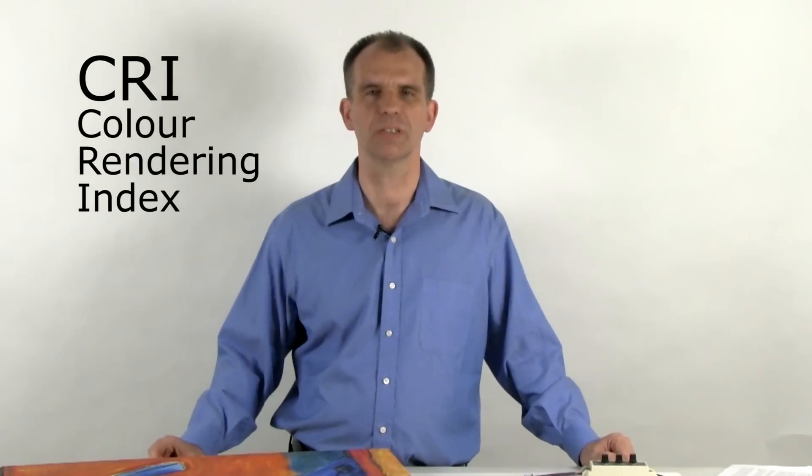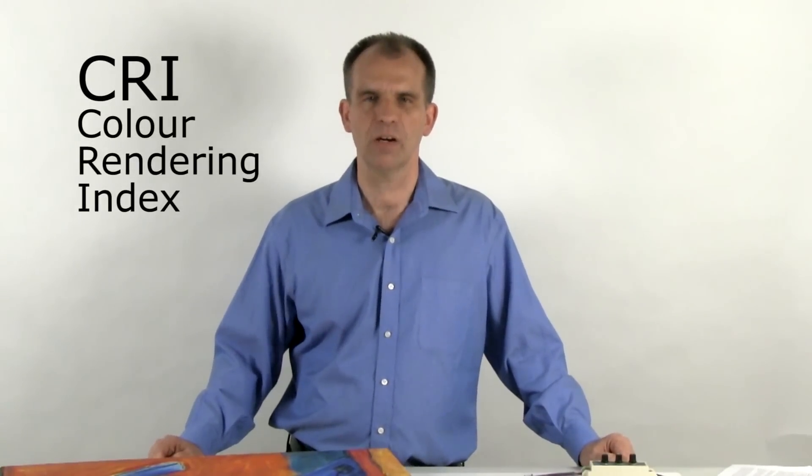Now we started out talking about color rendering, and now the question becomes how do we know how good is our light source at color rendering? What kind of number, what kind of value, how can we figure out what that is? Well, luckily we have this thing called CRI, which is the color rendering index.